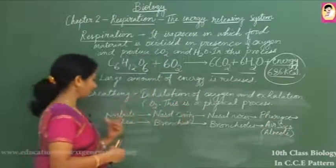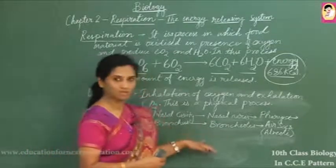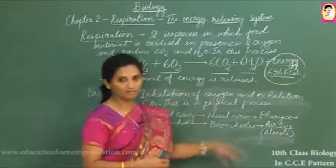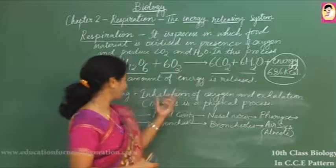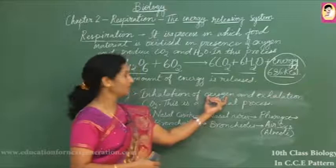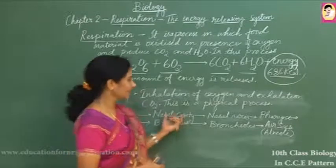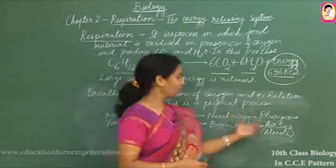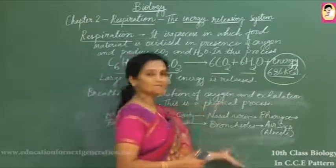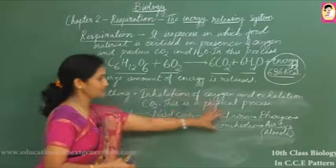During inhalation, more oxygen from the air is consumed. During exhalation, the exhaled air contains more carbon dioxide. Inhaled air contains nearly 21 percent oxygen and just 0.03 percent carbon dioxide. During exhalation, oxygen comes down to 16 percent and carbon dioxide increases. This is considered only a physical process.